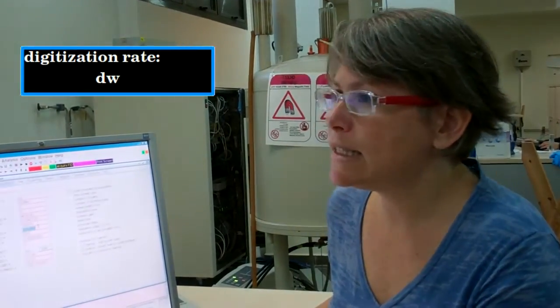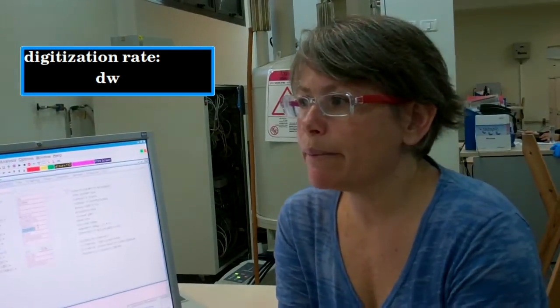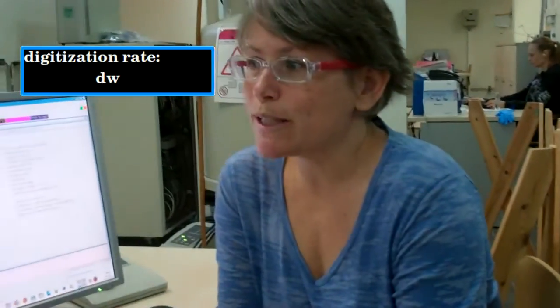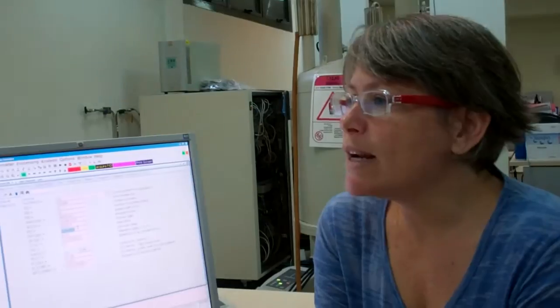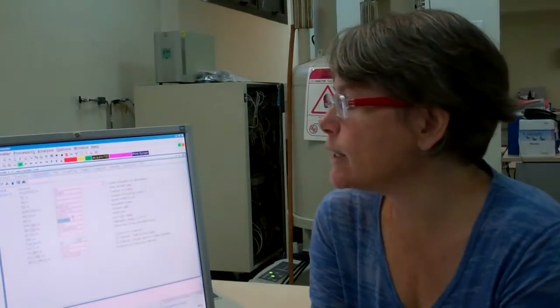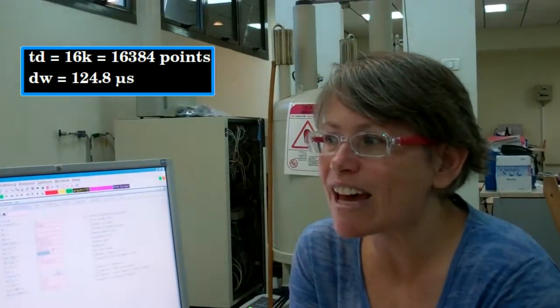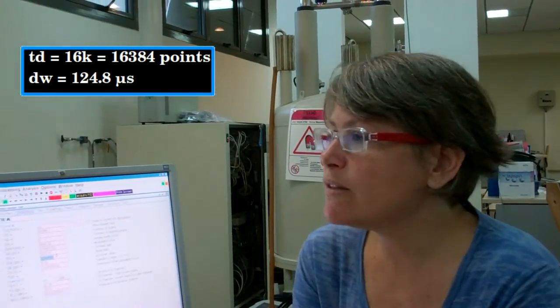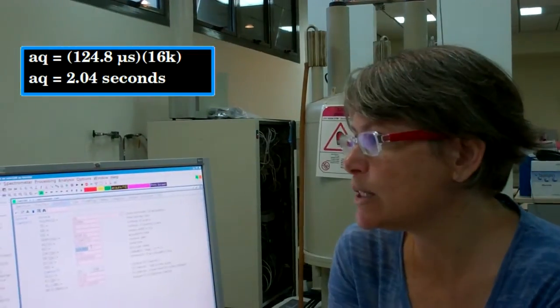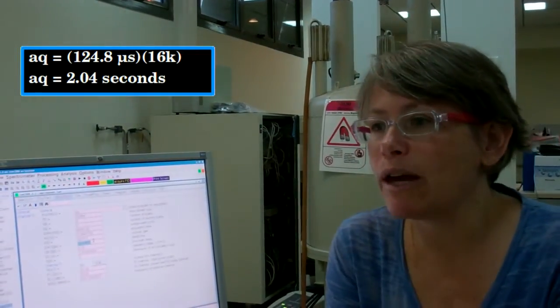Next on our list is DW, our dwell time, which is set by 1 over twice the spectral width in hertz. Right now, it's 124.8 microseconds. That's the time interval between each of the 16,000 data points, which gives us a total acquisition time of 2 seconds in order to record the FID.